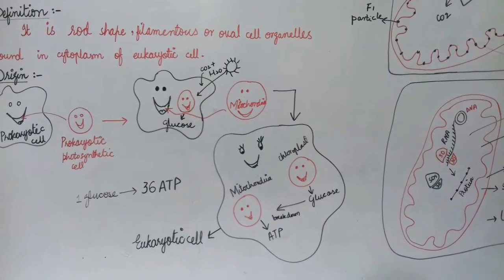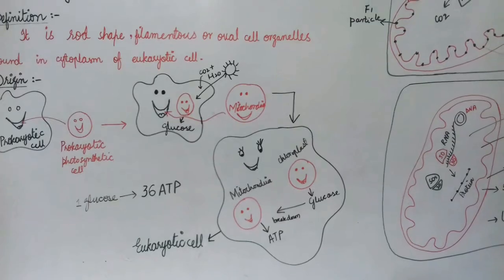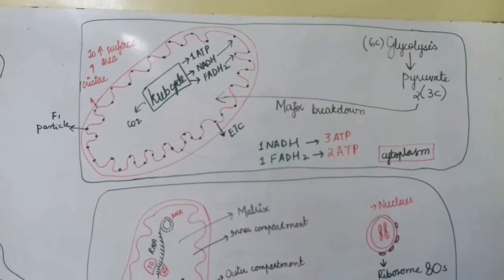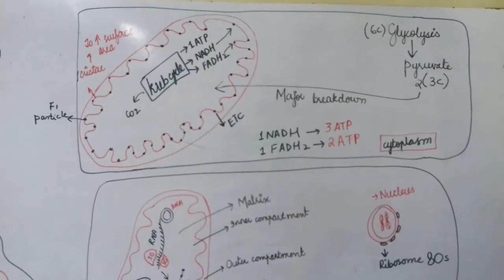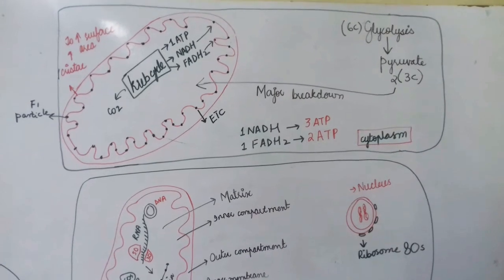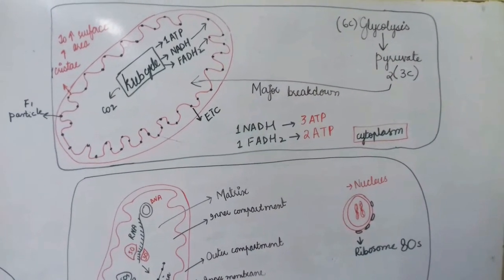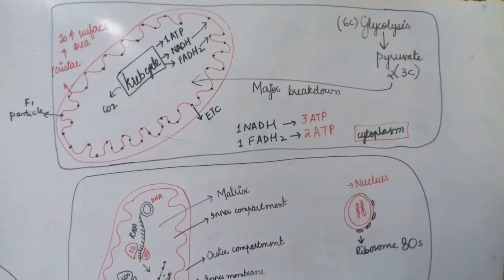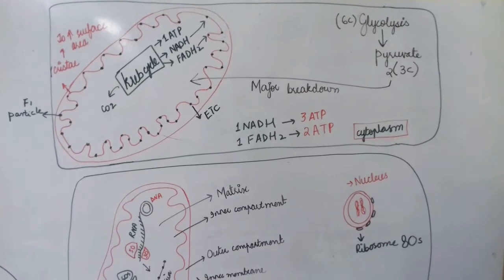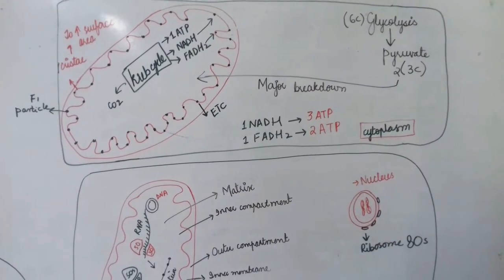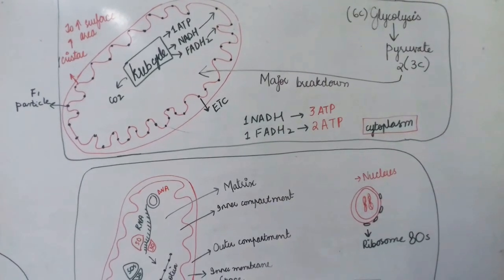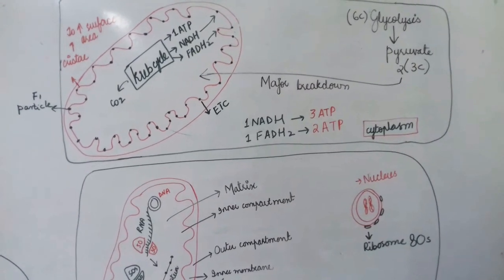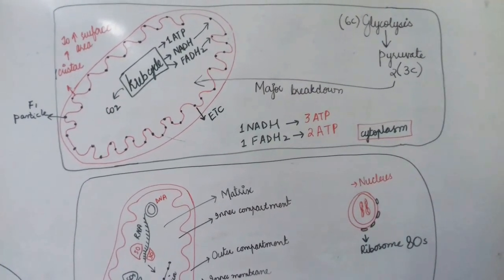In this diagram, mitochondria is present with cytoplasm surrounding it, because mitochondria is present in cytoplasm. Glycolysis—the process where glucose undergoes glycolysis (glyco means glucose, lysis means splitting or breakdown)—occurs in the cytoplasm. Glucose is a 6-carbon compound; from it, pyruvate is formed, which is a 3-carbon compound. So 2 pyruvates are produced, and some ATP is also released.